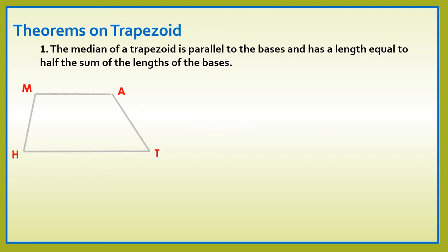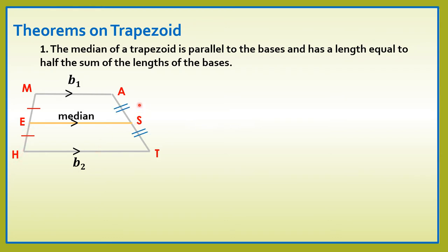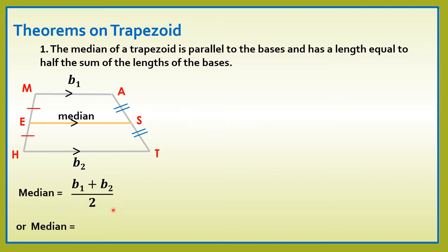Let us consider this trapezoid MATH. Let us draw here the median, which is parallel to the two bases. Let us name this median as ES. So, meron tayo ditong midpoint E at midpoint S. Ibig sabihin, yung ME natin is equal to the measure of EH, and yung measure ng AS is equal to the measure of ST. The median is equal to B1 plus B2 all over 2, or median is equal to 1 half times B1 plus B2.